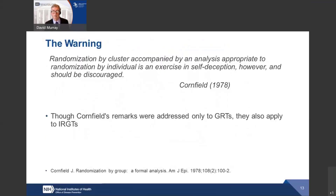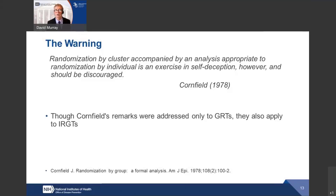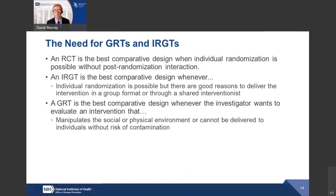Jerry Cornfield published a piece in the American Journal of Epidemiology in 1978 which is a very concise statement: 'Randomization by cluster accompanied by an analysis appropriate to randomization by individual is an exercise in self-deception and should be discouraged.' You have now all been warned — please don't do that. Though Cornfield's original remarks were only addressed to group randomized trials, they certainly also apply to individually randomized group treatment trials.